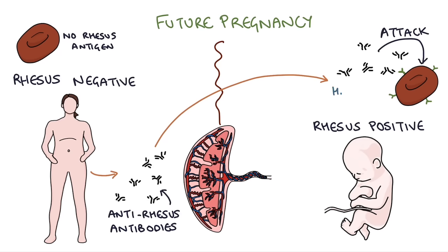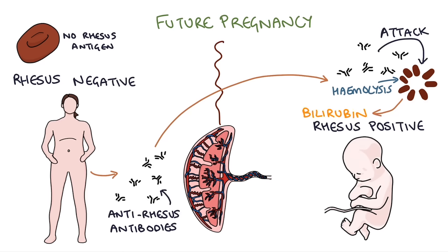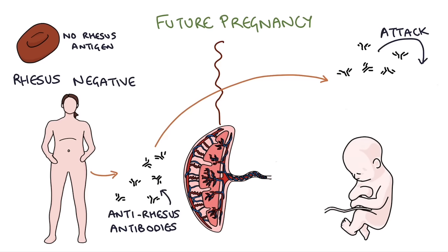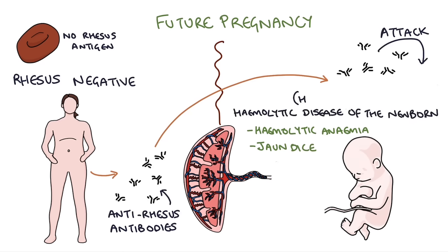As the baby's blood cells are hemolyzed or destroyed, that releases chemicals into the baby's body, particularly bilirubin, which is responsible for causing jaundice. Slight jaundice in babies is normal and called physiological jaundice, but when bilirubin levels get very high it can cause significant brain damage and long-term learning difficulties. This process is called hemolytic disease of the newborn, or HDN.